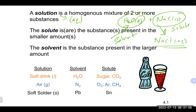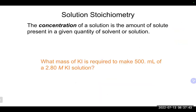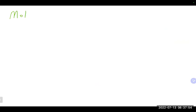Solutions can technically be in any state — air is an example of a gaseous solution, with nitrogen as the major component and oxygen second. Solder is an example of a solid solution where lead is the solvent and tin is the solute. Molarity is the most common unit of concentration we use.